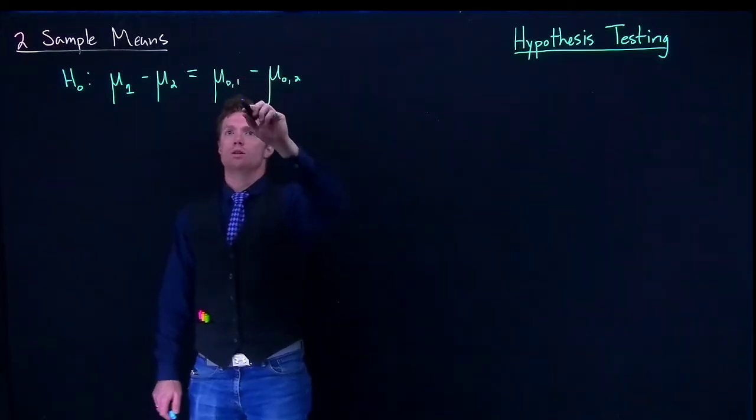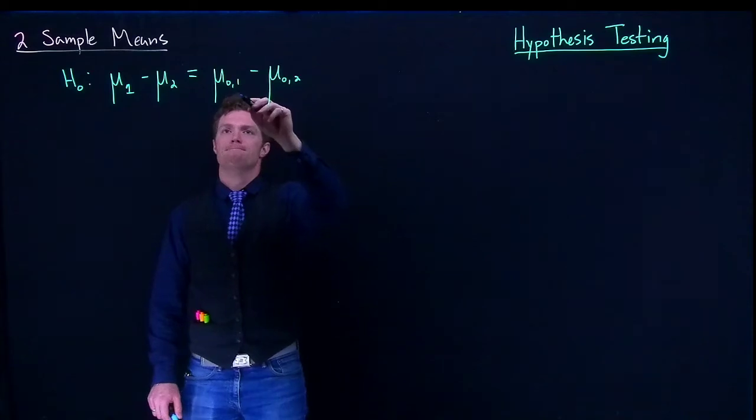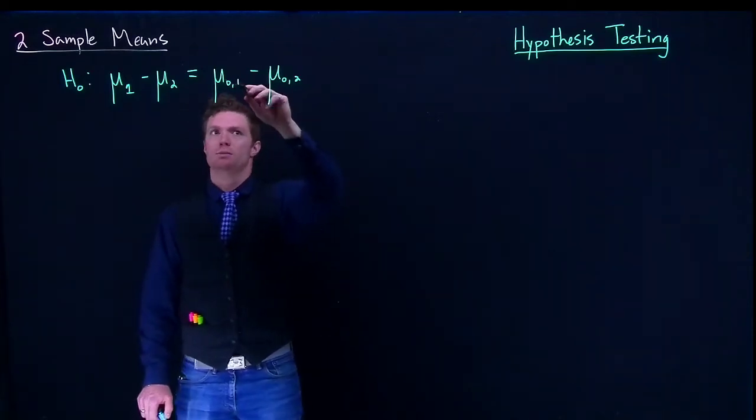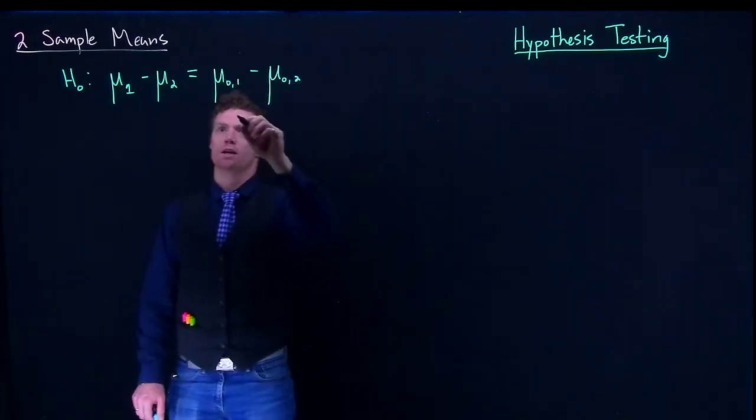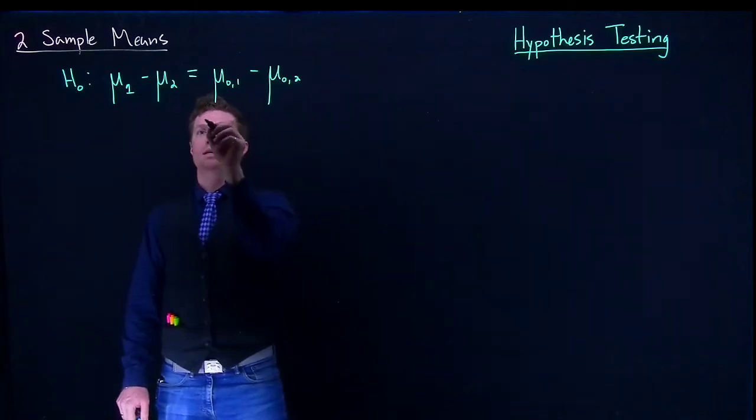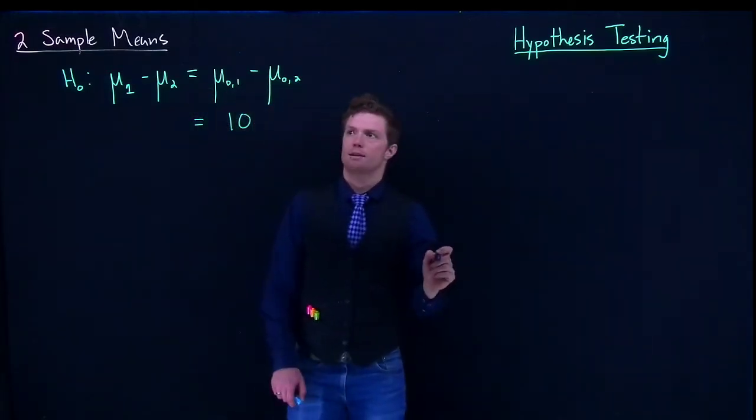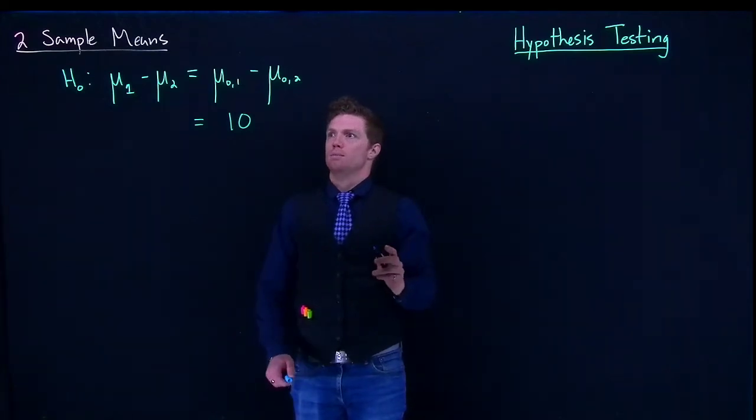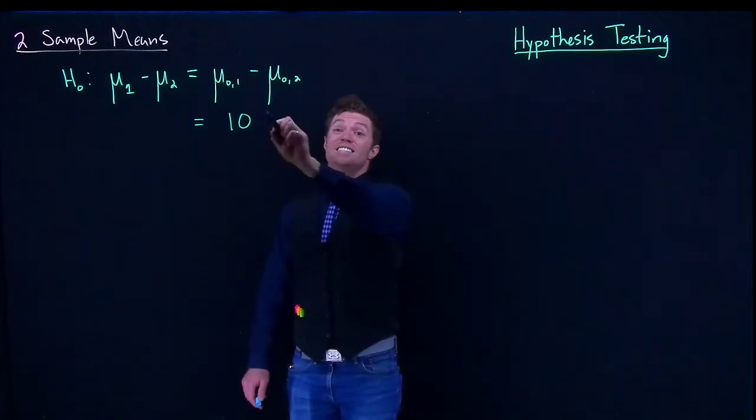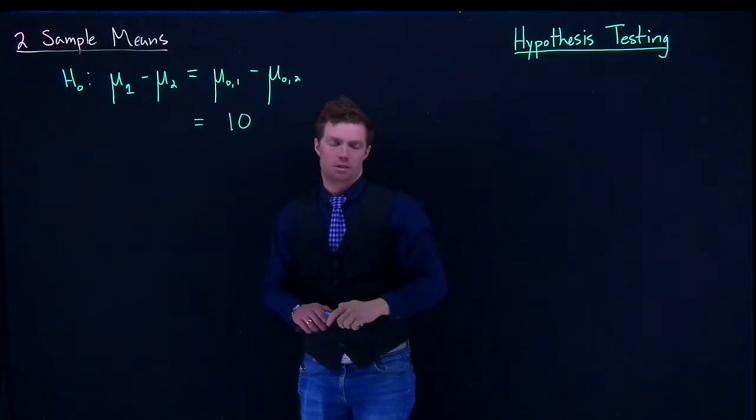So when we do this, we usually don't just say that the mu1 is a specific value and mu2 is a specific value. We normally say that this would be equal to like 10 or something like that, and so that we say that the difference between these two is a specific value.